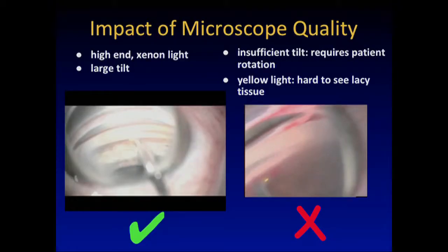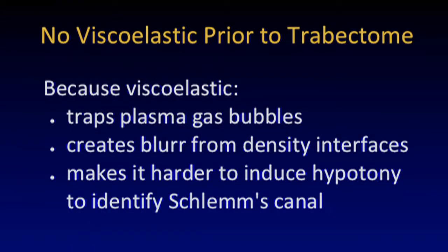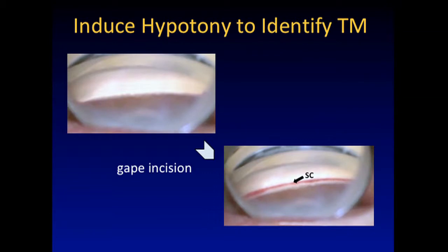Xenon is a more bluish light and it allows you to see a lacy structure that is semi-translucent. Don't use viscoelastic — those with experience from first generation packages have used it, but you're trapping bubbles, trapping blood, and you will not see. I will show you how to induce hypotony to identify the structure, because this is perhaps the most common cause of trabectome failure. Not doing trabecular meshwork ablation — instead ablating the ciliary body. That brown structure in the angle you thought was the meshwork is actually a highly arterial structure. Lots of bleeding, high pressure, and you will never do this procedure again.